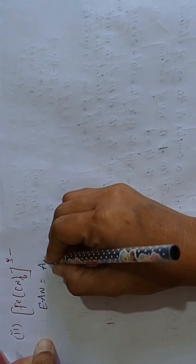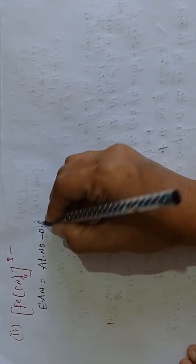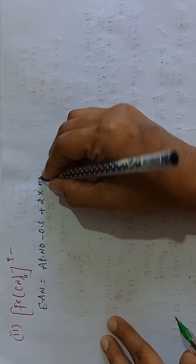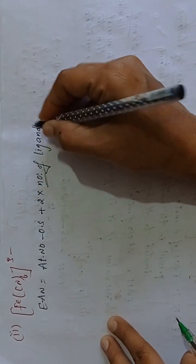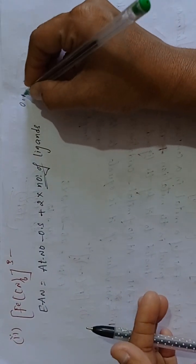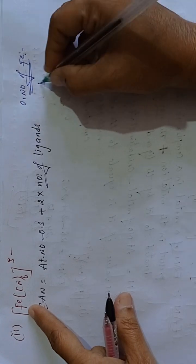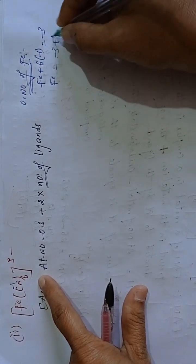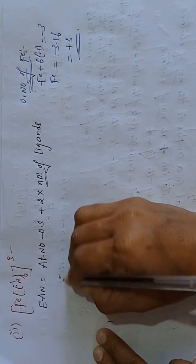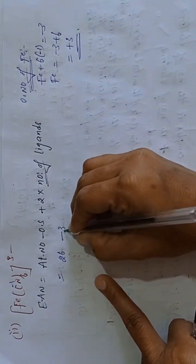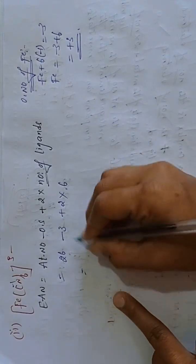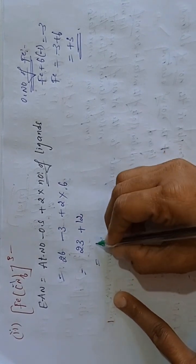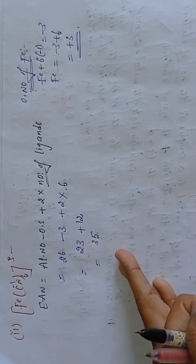EAN = atomic number of metal minus oxidation state of central metal atom plus 2 into number of ligands. First, oxidation state of iron: Fe + 6×(−1) = −3, so Fe = −3 + 6 = +3. Then EAN = 26 − 3 + 2×6 = 23 + 12 = 35. It is not the atomic number of the nearest noble gas element.